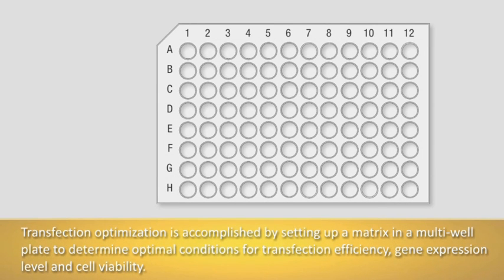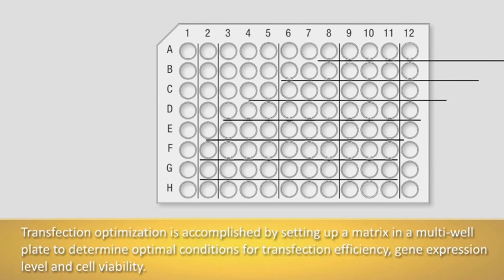Transfection optimization is accomplished by setting up a matrix in a multi-well plate to determine the conditions that result in the best transfection efficiency, gene expression levels, and highest cell viability.